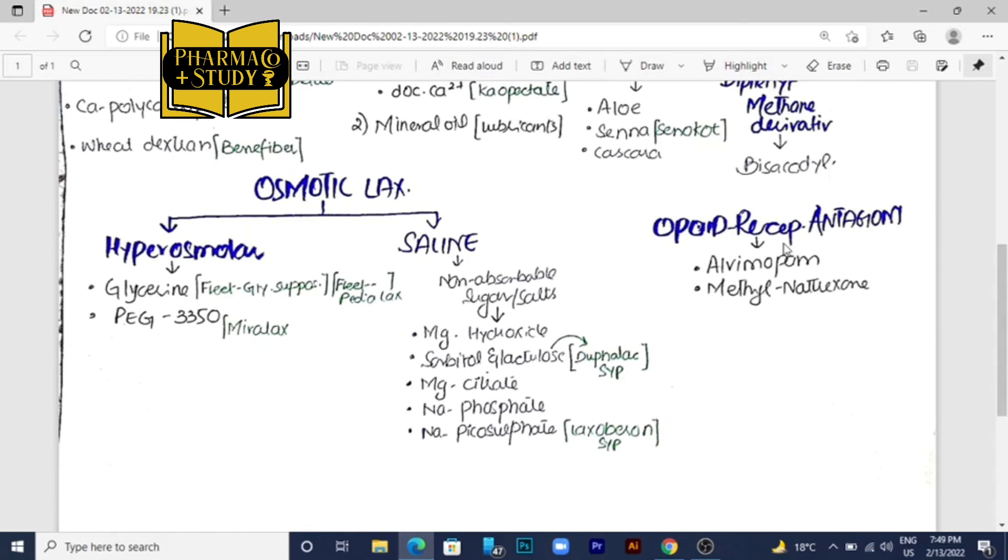The other class is the opioid receptor antagonist: alvimopam and methylnaltrexone. As we all know, opioids, specifically morphine, cause constipation. It is a main side effect of all opioid drugs. So it is very clear that the antagonist, opioid receptor antagonist, will treat the constipation.